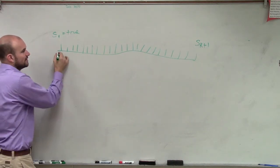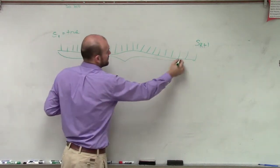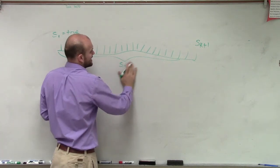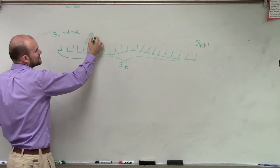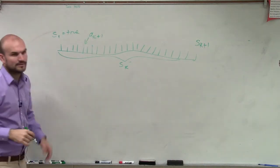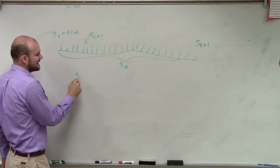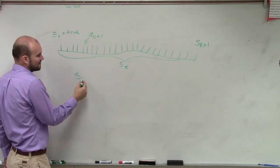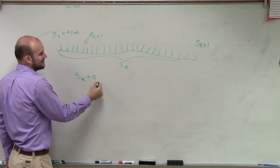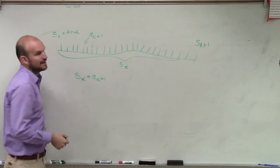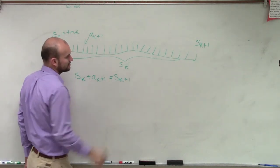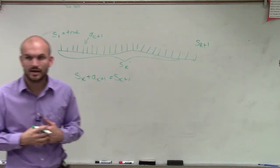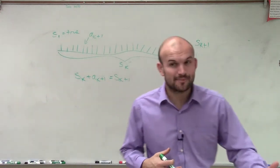Then what we're going to prove is we're going to call this s of k, and then we're going to call each one of these dominoes a of k plus one. So what we're going to say is if we can take our value of s of k, add it to a of k plus one, and if that equals s of k plus one.